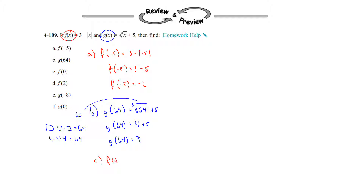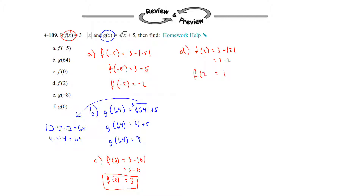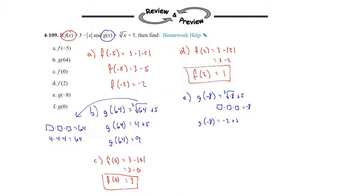C is f of 0 — plug 0 in for x, so 3 minus the absolute value of 0. The absolute value of 0 is 0, and 3 minus 0 is 3, so f of 0 is equal to 3. D is f of 2, which equals 3 minus the absolute value of 2. The absolute value of 2 is 2, so 3 minus 2 is 1, and f of 2 is equal to 1. E is back to the g function: g of negative 8 equals the cube root of negative 8 plus 5. What number times itself 3 times gives negative 8? That would be negative 2. So negative 2 plus 5 means g of negative 8 is equal to 3.